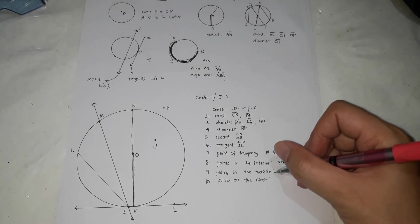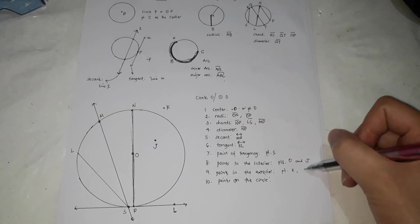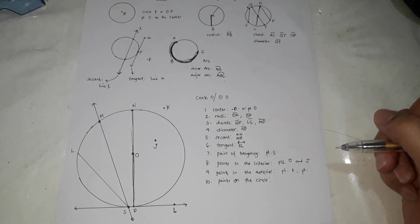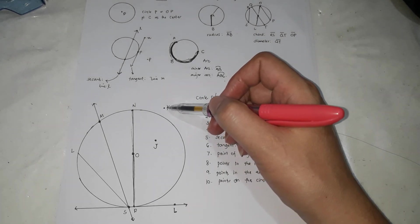Points in the exterior - outside the circle. It's point K and point L. Point L is outside. Point K is also outside.